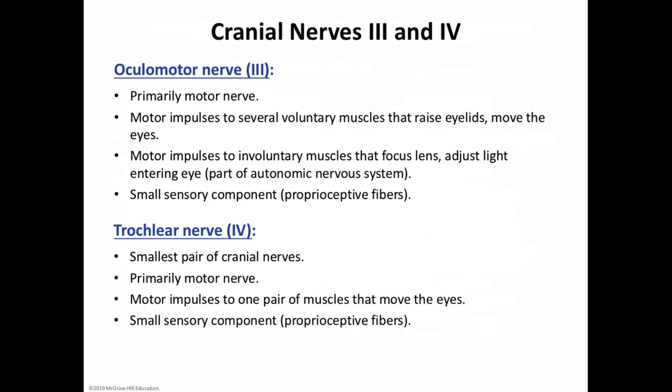Cranial nerve number four is the trochlear nerve — the smallest pair of cranial nerves. They arise from the midbrain and conduct motor impulses to the fifth pair of external eye muscles.